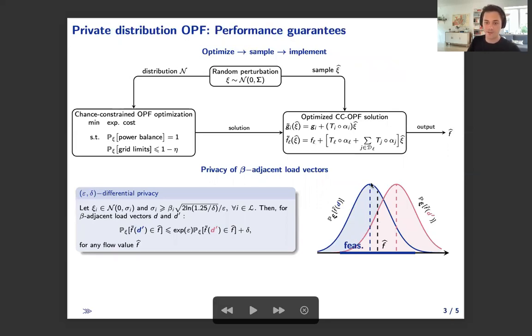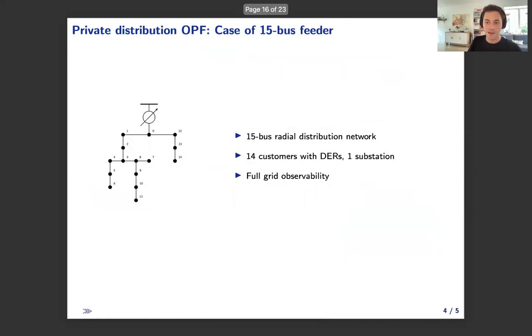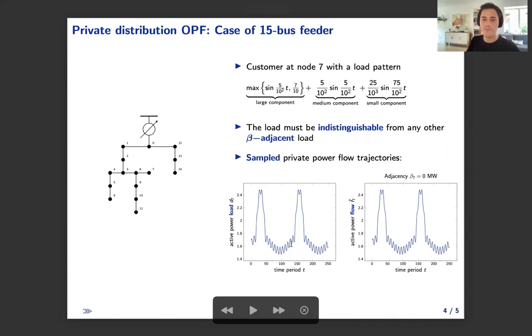To show how it works in practice, consider this 15-bus radial distribution network with 14 customers and assume that you can have access to voltage and currents to monitor activity of grid loads. And just for example, take the customer at this node seven that has very typical load profiles that consist of three components. The first component, like a large one with these two peaks on this graph, there is also a medium component and very small but high frequency component as well. And what we'd like to do is take this load profile and make it indistinguishable from any other load profile in the range of plus minus beta.